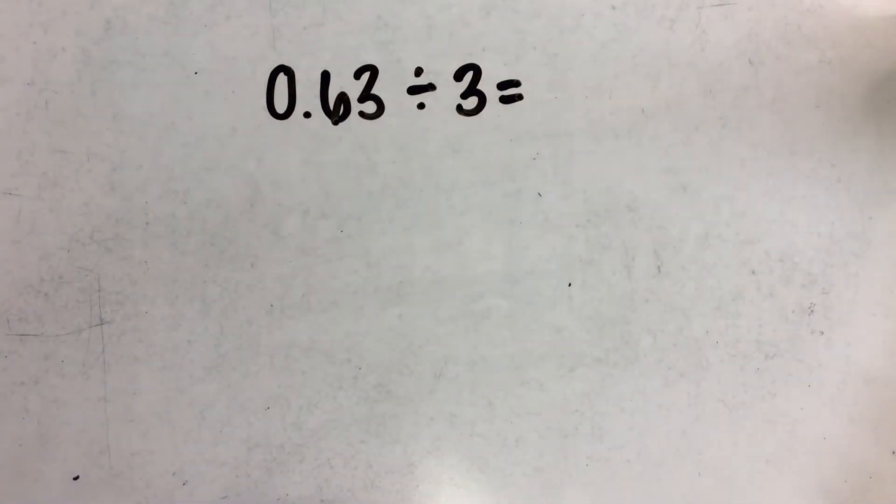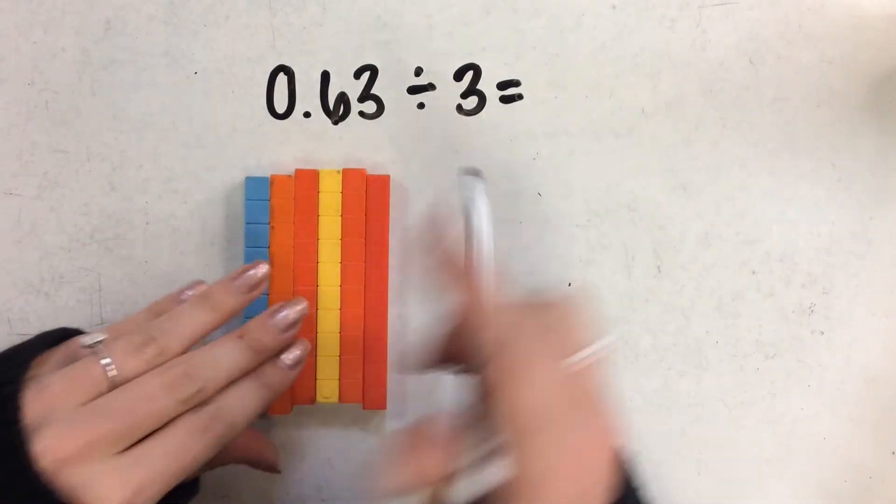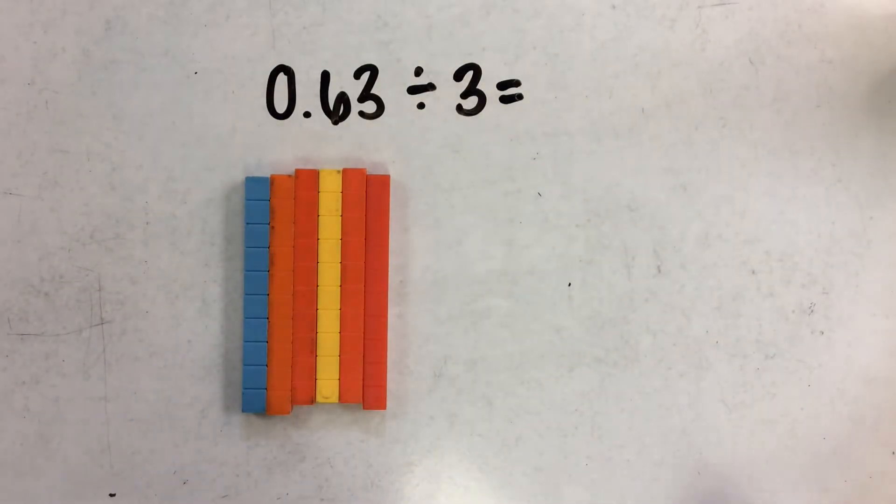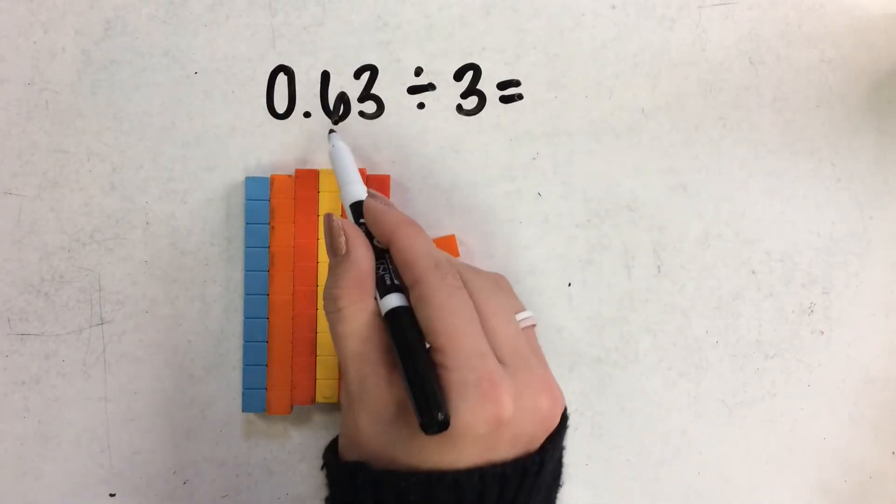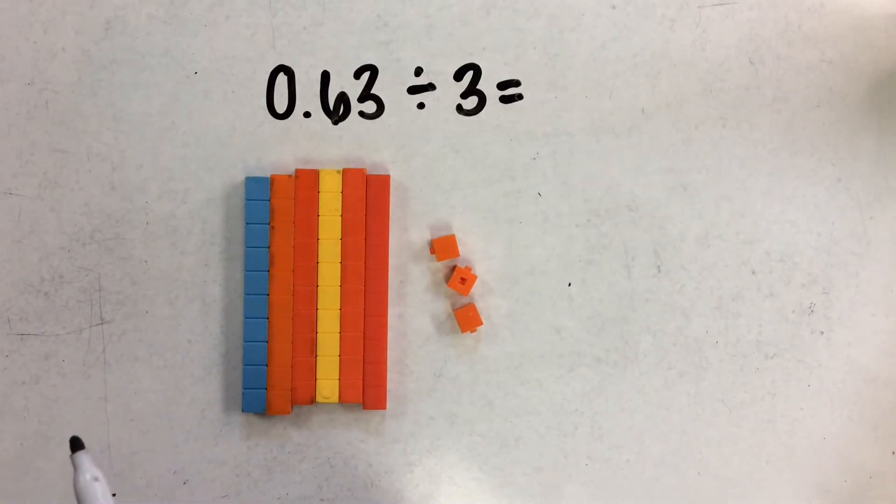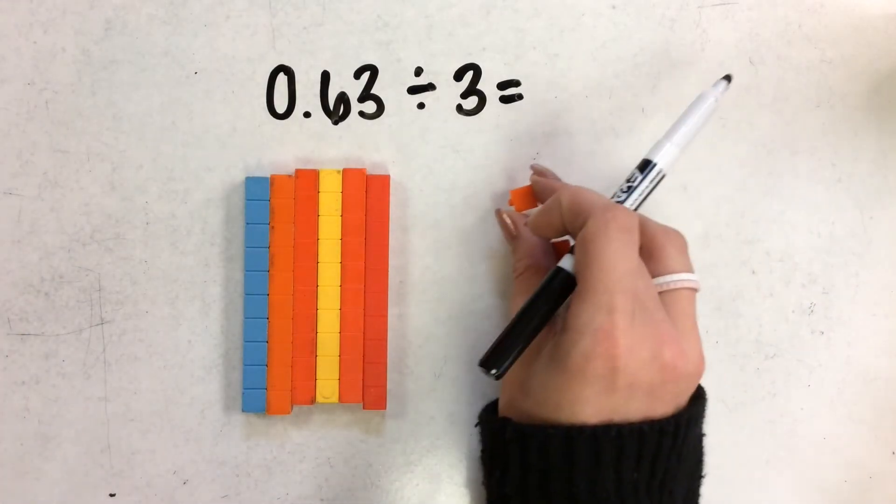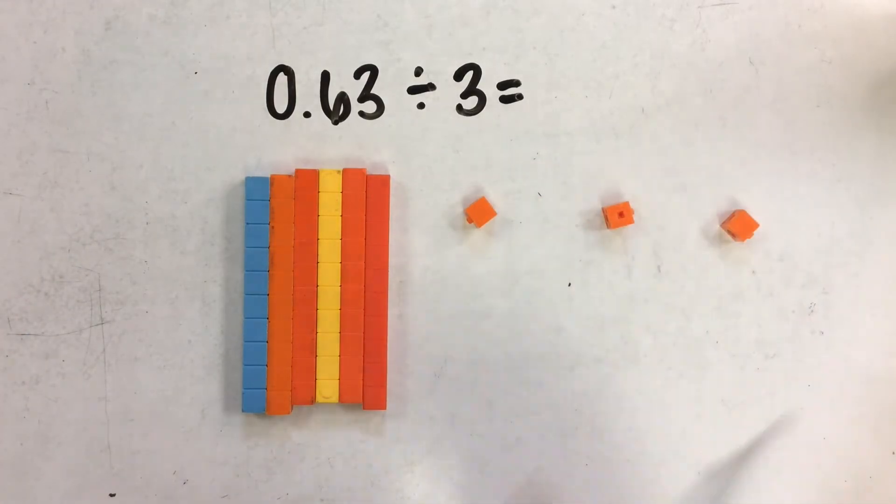So I'm going to use my base 10 blocks again. And I have 6 tenths and 3 hundredths, or 63 hundredths. And I want to put it into 3 different groups. I have my 3 hundredths, so those can easily go in 1, 2, 3 groups.